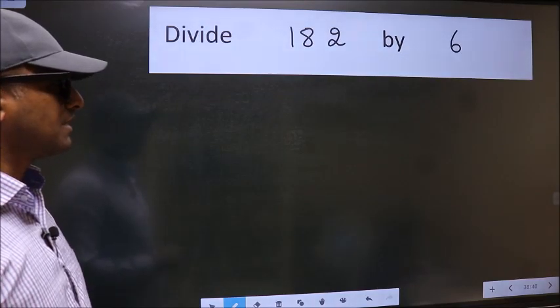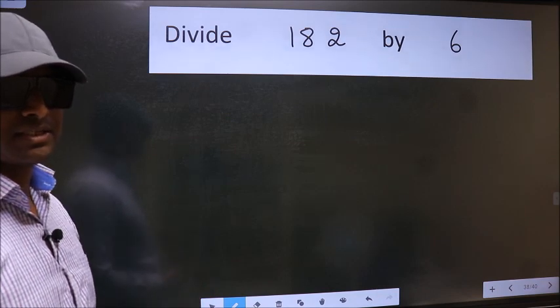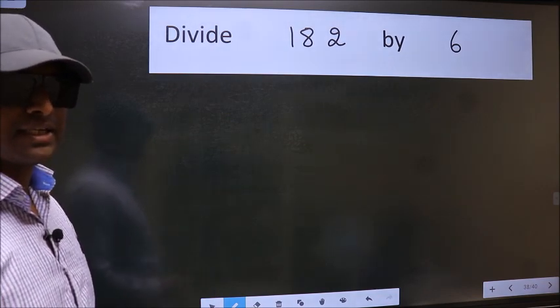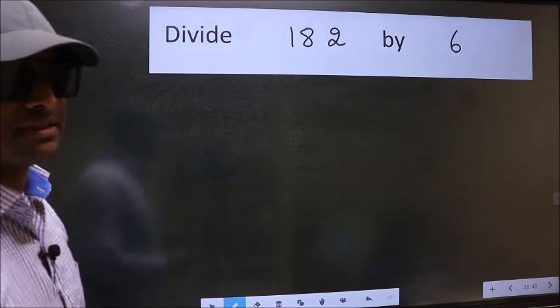Divide 182 by 6. While doing this division, many make this mistake. What is the mistake that they make? I will let you know, but before that, we should frame it in this way.